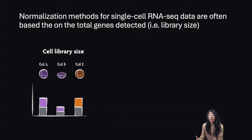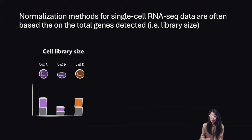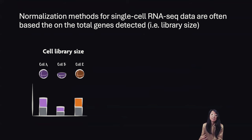In order to correct for such technical variation, we can apply normalization methods. Normalization methods for single-cell RNA sequencing data often rely on the total number of genes detected. One type is called library-size normalization, also sometimes called size-factor normalization, relative-counts normalization, counts-per-million normalization, and so forth. In library-size normalization, we take the observed gene expression and divide it by the total number of genes detected in each cell, also known as the library size.